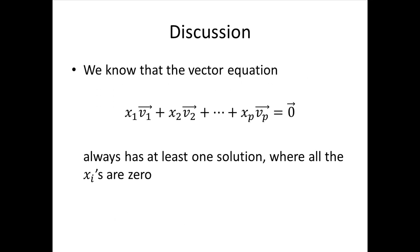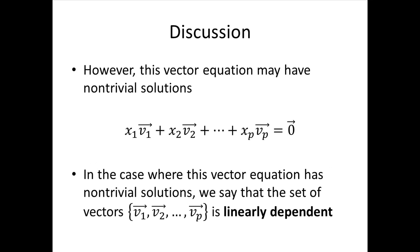Certainly that is a solution. If we look at all of the x's equaling 0, 0 times v1 plus 0 times v2 and so on, 0 times all these vectors will give us one big 0 vector. But again, that vector equation might have non-trivial solutions, and in that case where the vector equation has non-trivial solutions, we say that set of vectors is linearly dependent.